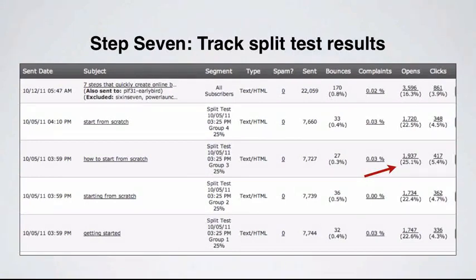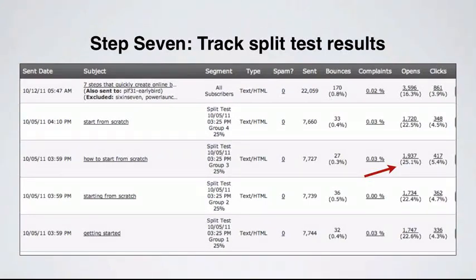Looking at the bottom four here, we see that each of these messages was delivered to over 7,500 names. Going over to the far right, we'll see the opens and the clicks. We can track the percentage of opens based on the different subject lines, and then the click-through rates once the person actually opened the email. The second one has the most significant results — the one that says 'how to start from scratch' — with a 25% open rate, which is 3% higher than any of the others, and a higher click-through rate of 5.4%. So we want to look at that content and either run that copy to a larger list or really leverage what we've done there.